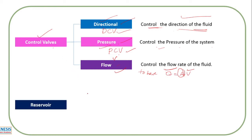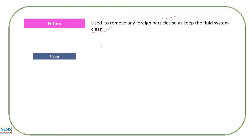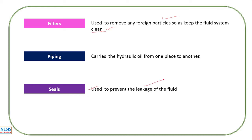Next is the reservoir, where we store the oil. Then there are filters — on the return line, if there are any foreign matter or dust-like material, these will be collected so that fresh, clean oil enters the tank. Next is piping — these are the carriers of the fluid, carrying the oil from one place to another. Next are seals, which restrict leakage of the oil. Numerous types of seals are used to prevent fluid leakage. If you know the importance of seals, you can adapt different types for your operation.